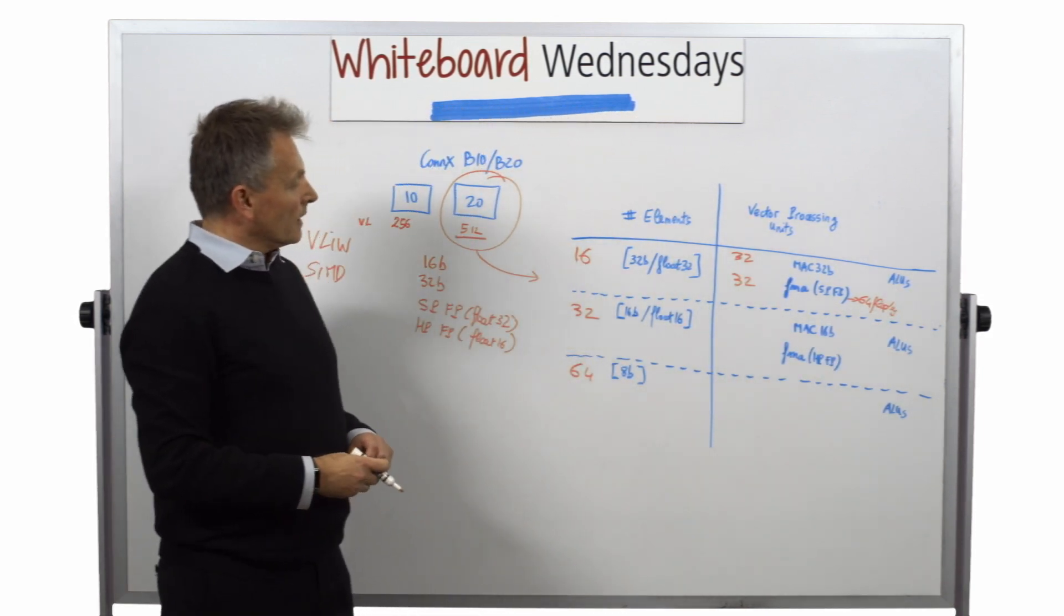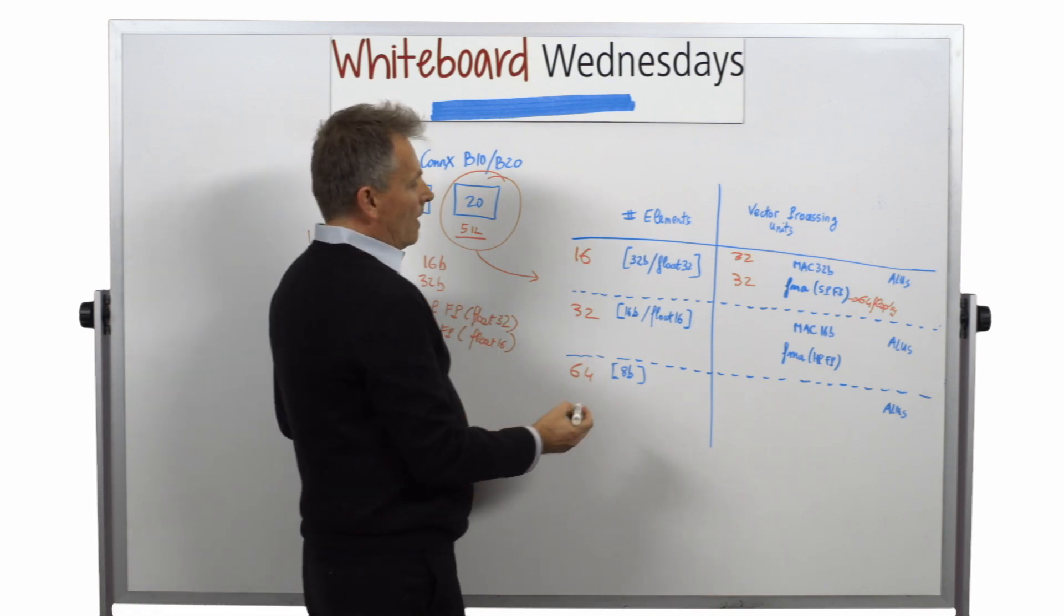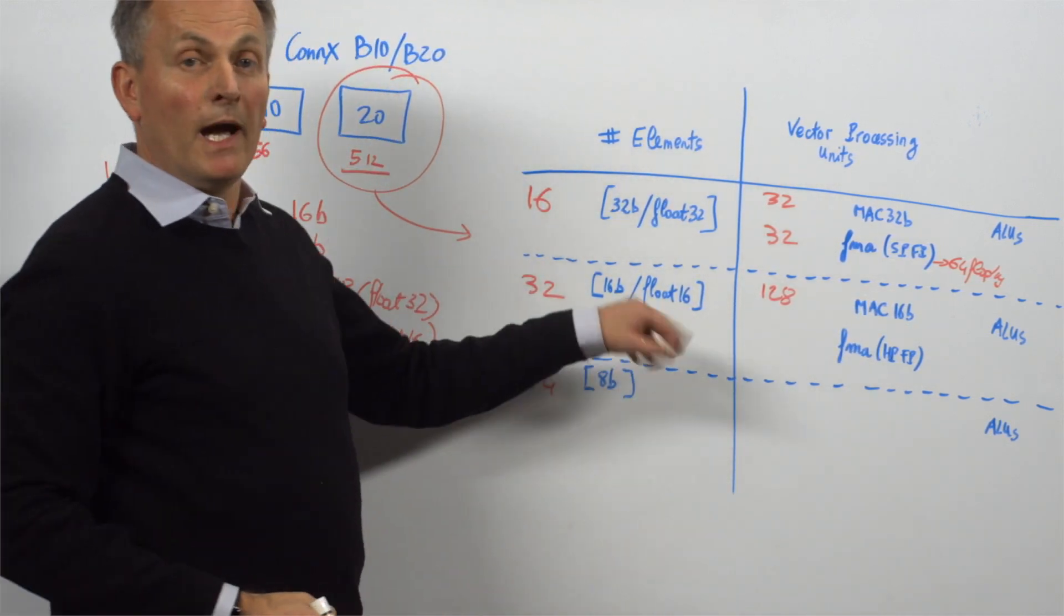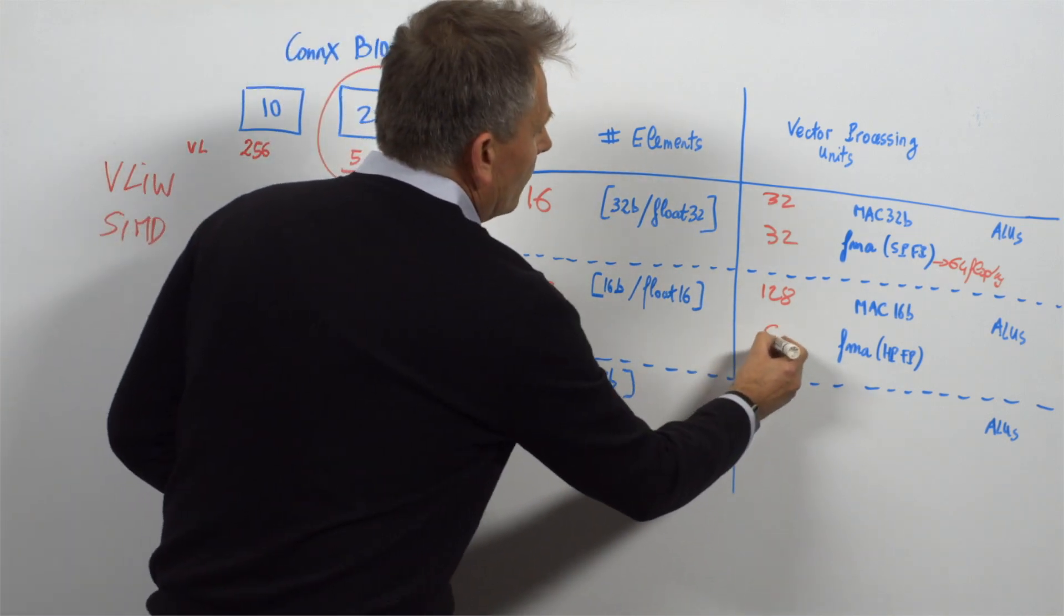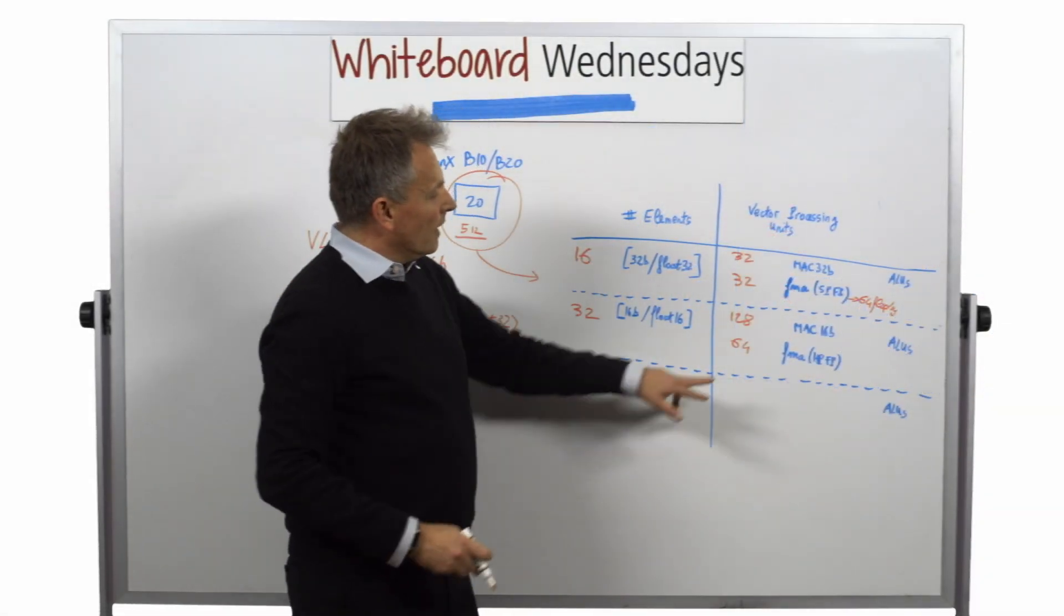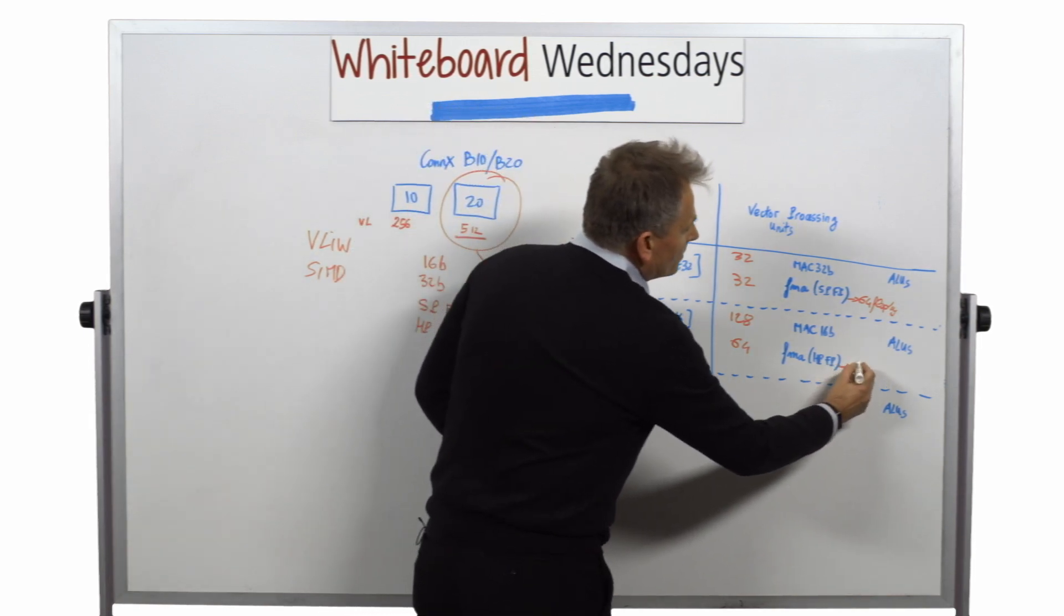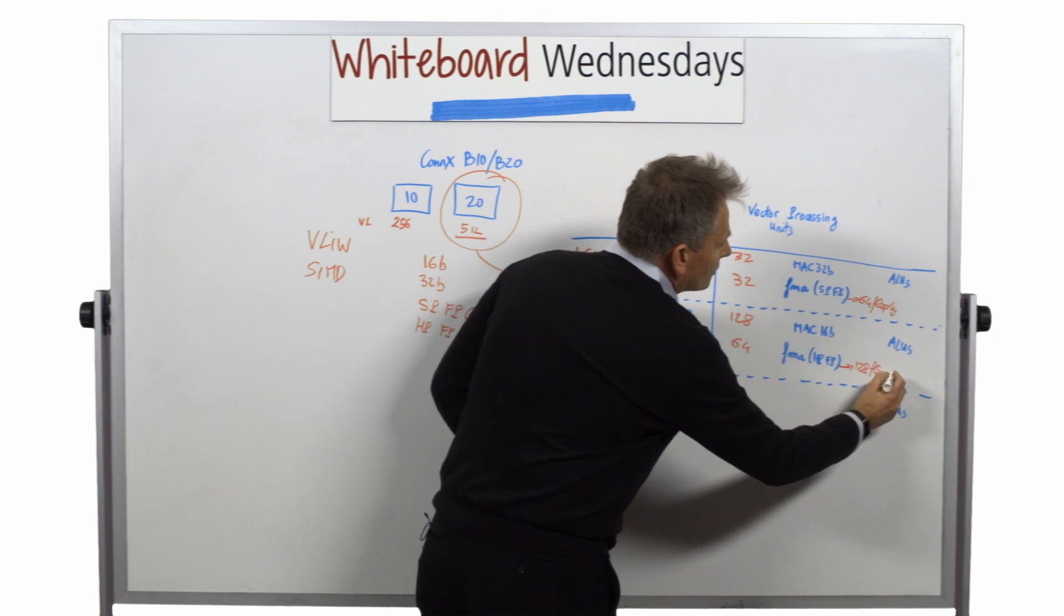In the context of 16-bit fixed point, we have 128 16-bit MAC operators. And then we have 64 float FMAs for half precision. Or in other words, the capabilities of doing 128 floating point operations per cycle.